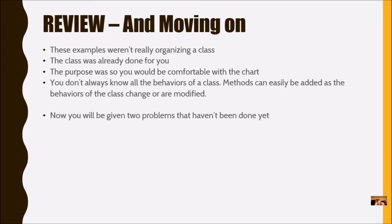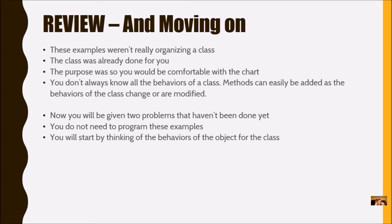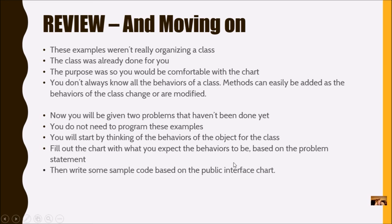Now you're going to be given two problems that haven't been done yet. So you're not going to look at any code. You're just going to be given the problem. You will not have to complete this program in ColdSculptor. This example is simply to organize the class, determine what your methods are going to be, what data might be needed, what types they are, just the organization part. You're going to start by thinking of the behaviors of that object. You're going to fill out the chart with what you expect the behaviors to be based on the problem statement. Then you might write some sample code based on the public interface chart. These will be fairly simple examples. I'm not going to ask you to really go into a lot of depth when it comes to programming. When you're going to hand write this code, you're not going to get into ColdSculptor and be actually turning in any programs.